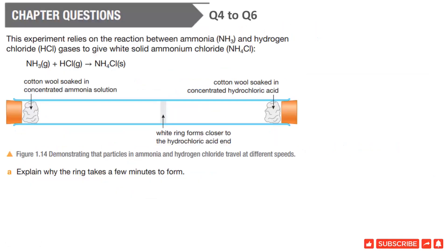Chapter questions, question number 4 to 6. This experiment relies on the reaction between ammonia NH3 and hydrogen chloride HCl gases to give white solid ammonium chloride NH4Cl. When NH3 in gaseous state is added to HCl in gaseous state, they join together and make ammonium chloride which is solid. This is deposition happening here. This is the experiment setup.